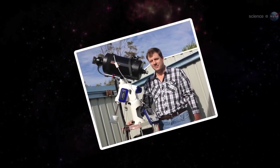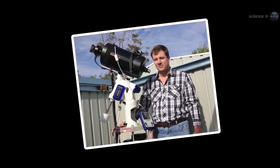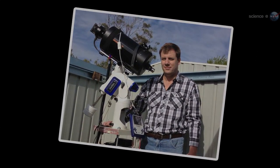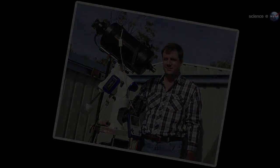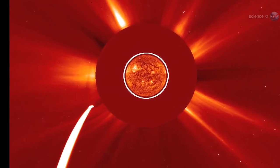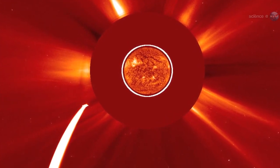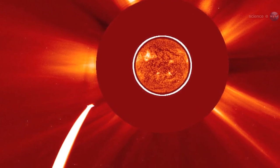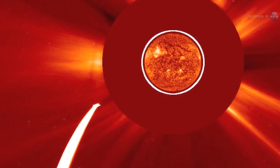Last November, amateur astronomer Terry Lovejoy discovered a different kind of comet. The icy fuzzball he spotted in the sky over his backyard observatory in Australia was heading almost directly for the Sun. On December 16th, less than three weeks after he found it, Comet Lovejoy would swoop through the Sun's atmosphere only 120,000 kilometers above the stellar surface.